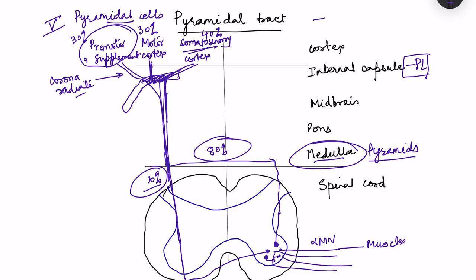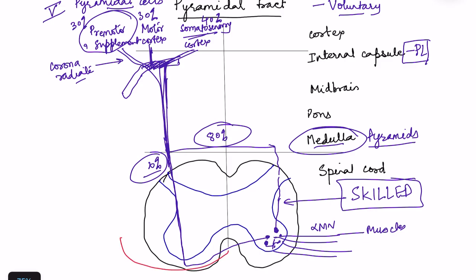The function of the pyramidal tract is voluntary movement. By supplying alpha motor neurons and interneurons in the spinal cord it causes voluntary movement. The 80% lateral corticospinal tract is responsible for skilled fine movements of distal muscles — like writing — while the 20% anterior corticospinal tract supplies proximal muscles for coarse movements.